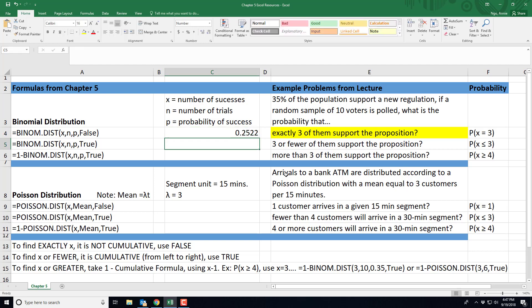And then when you hit enter, we get the probability of exactly three people supporting the proposition at 0.2522.